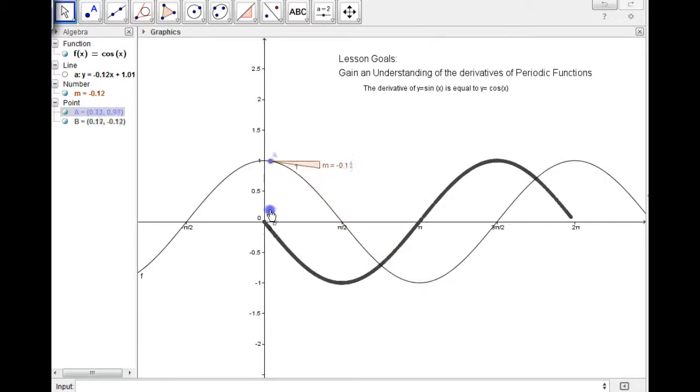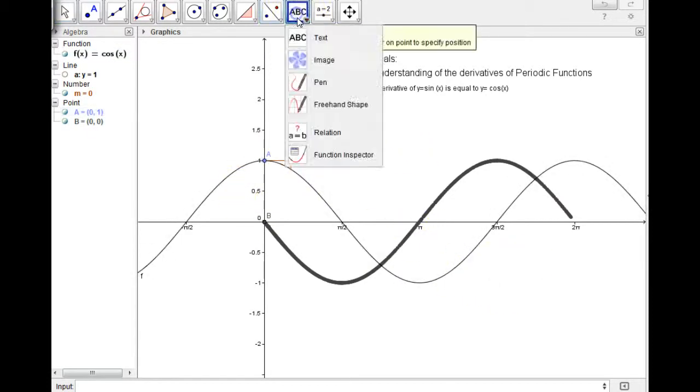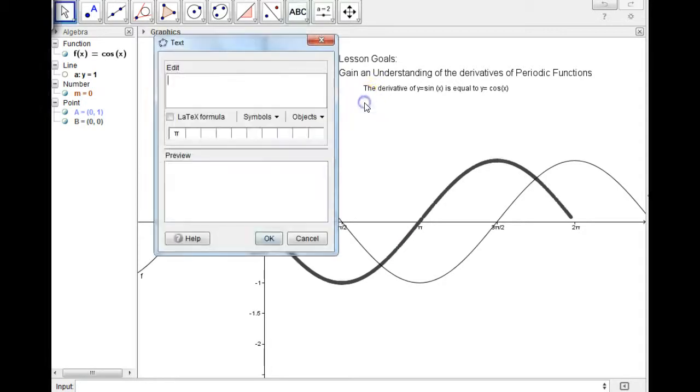Now it's a bit surprising. A lot of you were probably waiting to find out that the derivative of cos x, this is cos x. You were probably waiting to see that the derivative of cos x is sine x. But it's actually not sine x. So let's write in our second thing here. The derivative of y equals cos x is equal to y equals negative sine x.